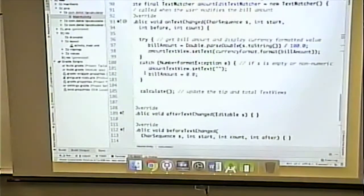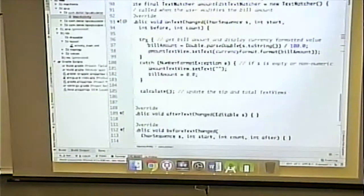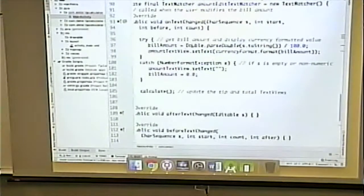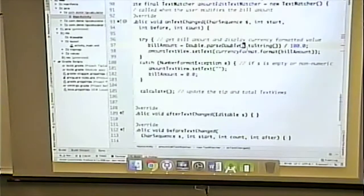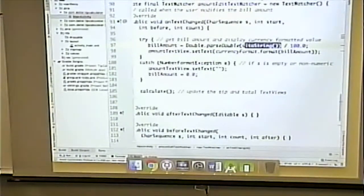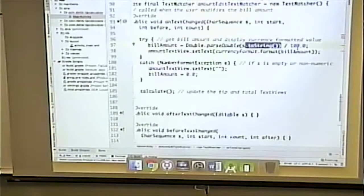So what do we do here? We have it wrapped around a try, just on the odd chance that someone types in something goofy. We take the value from the edit text field, this s. We parse double it, so we make it into a number, then we divide by a hundred.